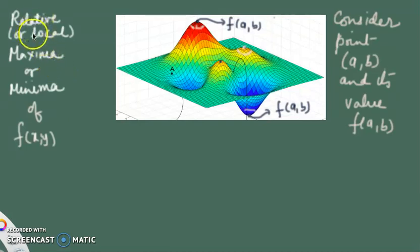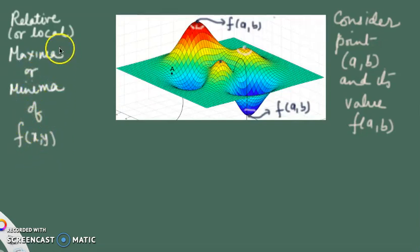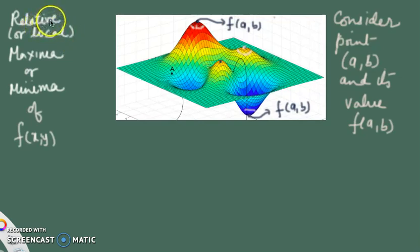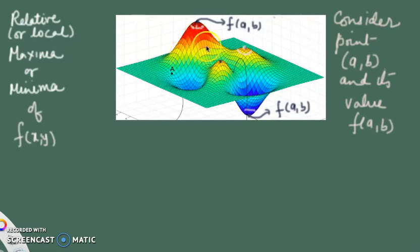Today I will discuss relative, or local, maxima and minima for a function of two variables. Before switching to the formal definition or the method to find local maxima and minima, let's first do some geometric interpretation to figure out how we can identify a point of maxima or a point of minima.